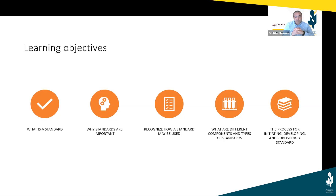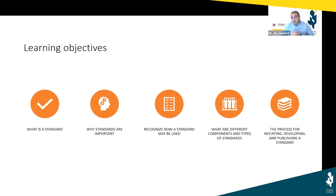The next thing I want to do is discuss why these standards are important. By the time we conclude this workshop, you should be able to recognize how you may use a standard, what are some of the different types of standards — specifically I'm going to talk about ASTM standards, the American Society for Testing and Materials — and what type of components their standards have. Last, if time permits, I intend to introduce you to the process of initiating a new standard, how to develop a standard, and what is the process of publishing a standard.